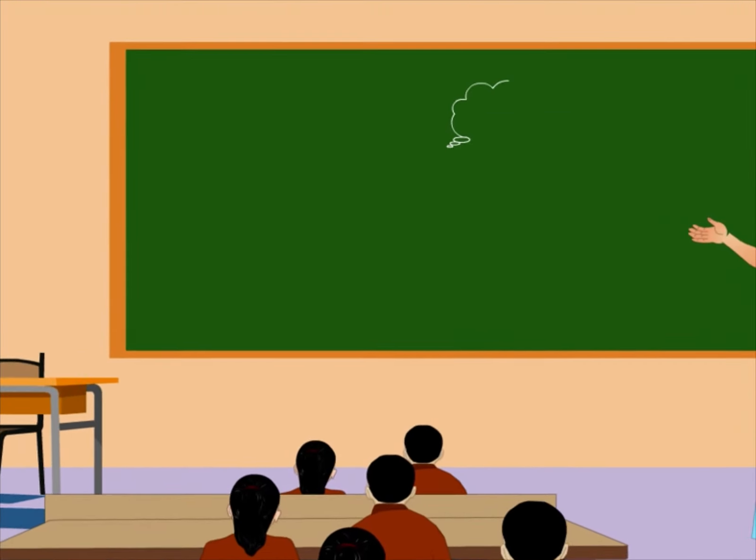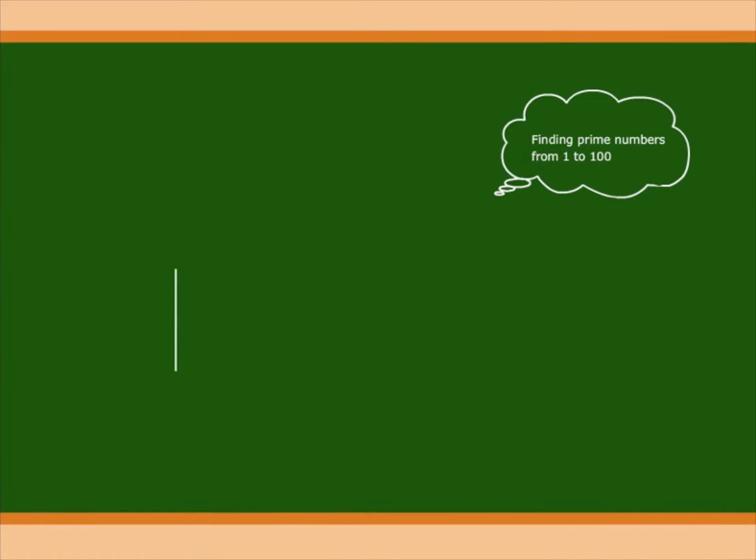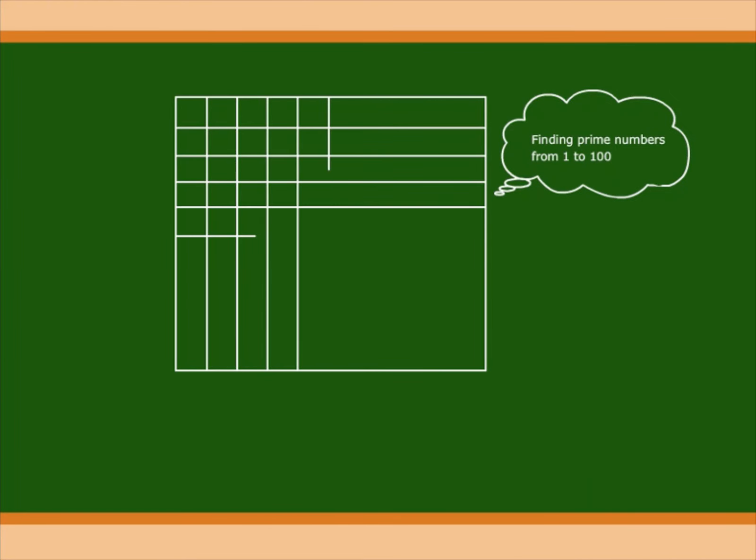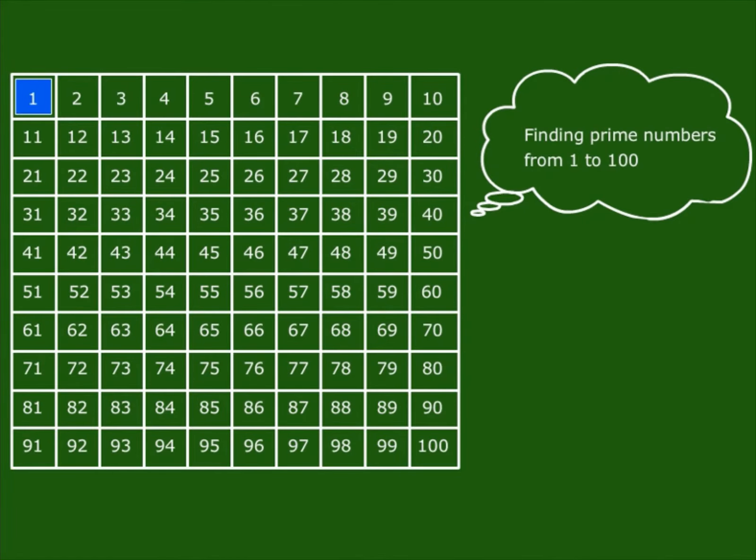Here let us find the prime numbers between one and one hundred. First let us write the numbers from one to one hundred. Put a cross mark on one because it is neither prime nor composite.